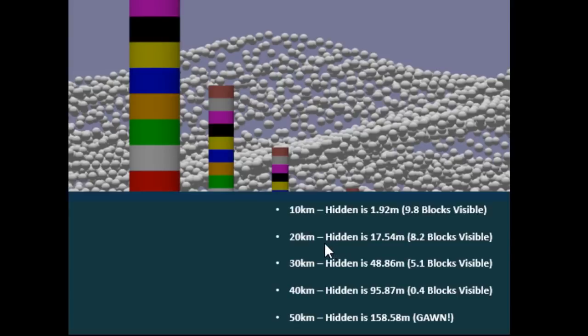The 20 kilometre column, the hidden amount is 17.54, so we should see about 8.2 blocks. 1, 2, 3, 4, 5, 6, 7, 8 and a little bit of the white one. So that one checks out.